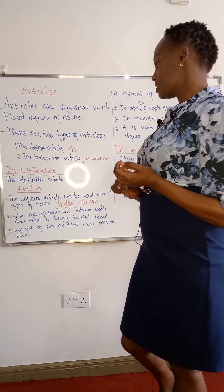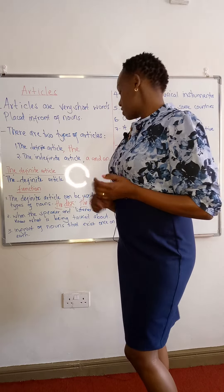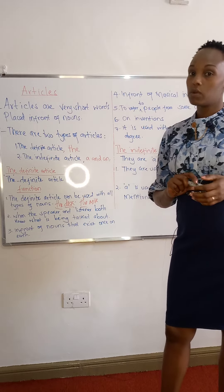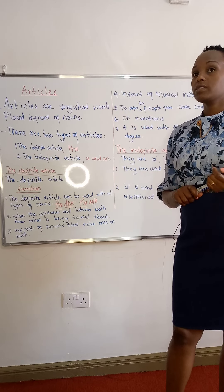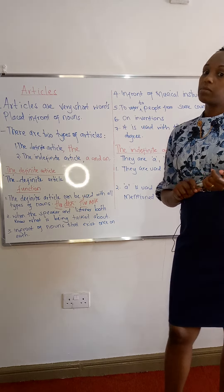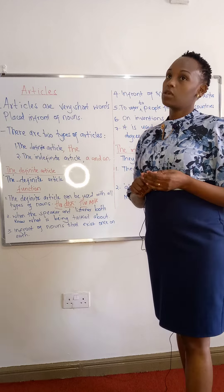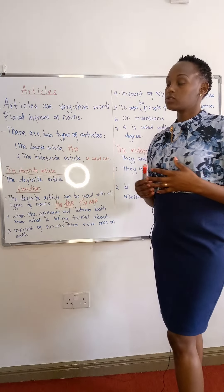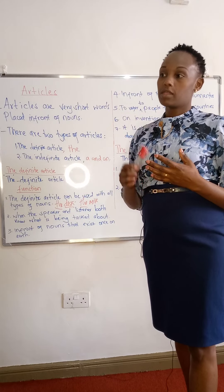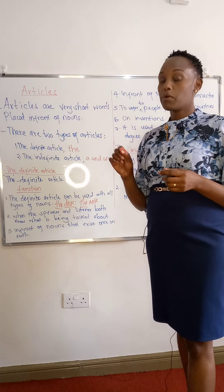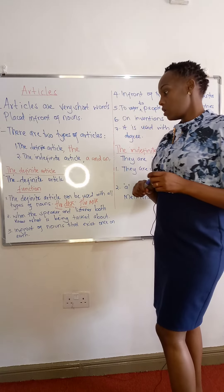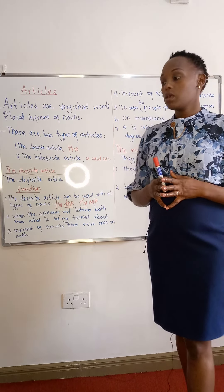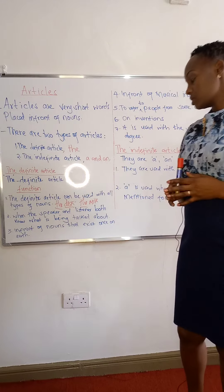Another function of the definite article: it is used when the speaker and the listener both know what they are talking about. For example, someone in class may go out, and someone may ask which boy has gone out, and then we both know — as the speaker and the listener both know — that it is 'the boy' who has gone out. So it is used when both the speaker and the listener know what is being talked about.